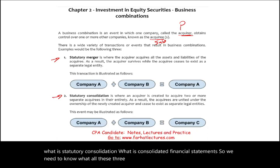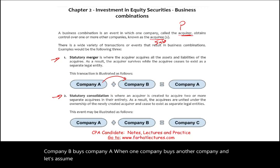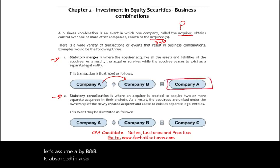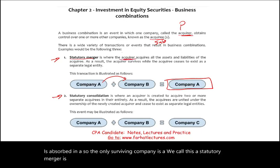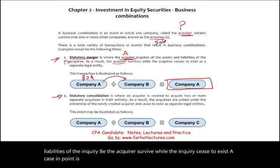When company A buys company B and B is absorbed into A, so the only surviving company is A, we call this a statutory merger. The acquirer, company A, acquires all the assets and liabilities of the acquiree, company B. The acquiree survives while the acquiree ceases to exist. A case in point: Bank of America bought Merrill Lynch. Merrill Lynch is gone and what survived is Bank of America.